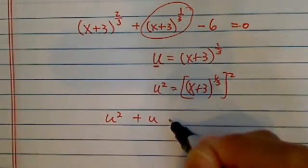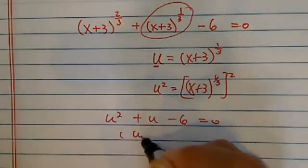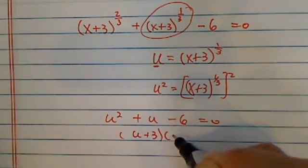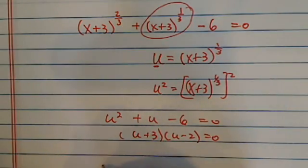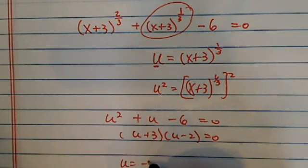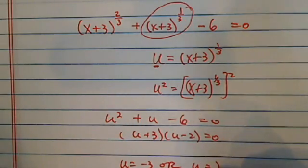it's a piece of cake. Minus 6 equal to 0, u minus 3, and plus 3, u minus 2 equal to 0. So u equal to minus 3, or u equal to positive 2.